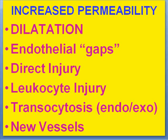Another effect or part of increased permeability is transcytosis. This is the passage of small fluid particles from one end of the endothelial cell to the other — it can be thought of as a combination of endo- and exocytosis. Last but not least, increased permeability often triggers off the growth of new blood vessels, though that's usually in a later stage of acute inflammation.